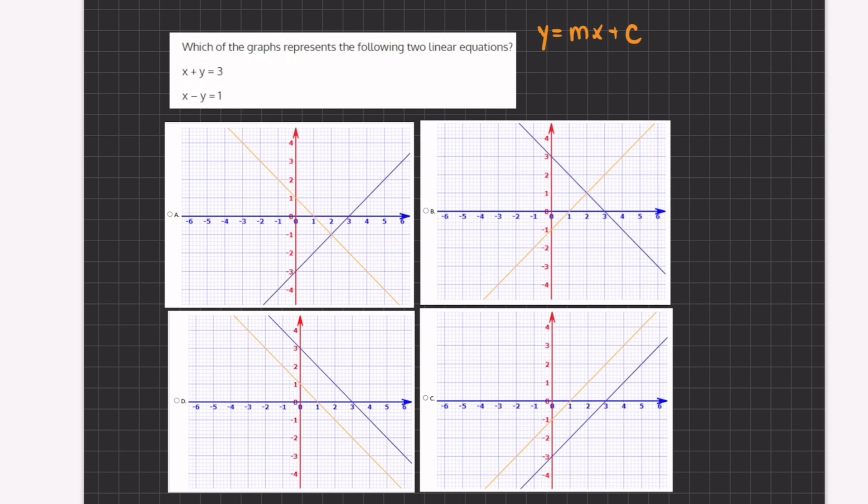Our easiest way to solve this problem will be to set both equations into point-intercept form, which is y equals mx plus c, where m will be our slope and c will be our y-intercept.